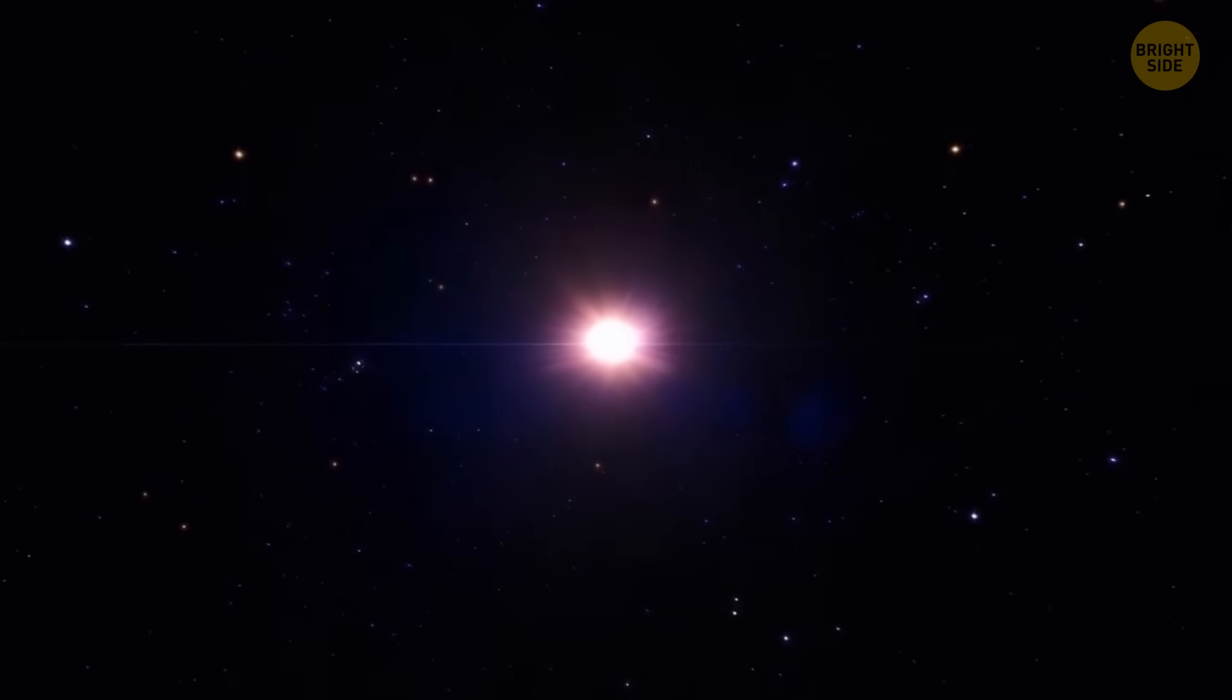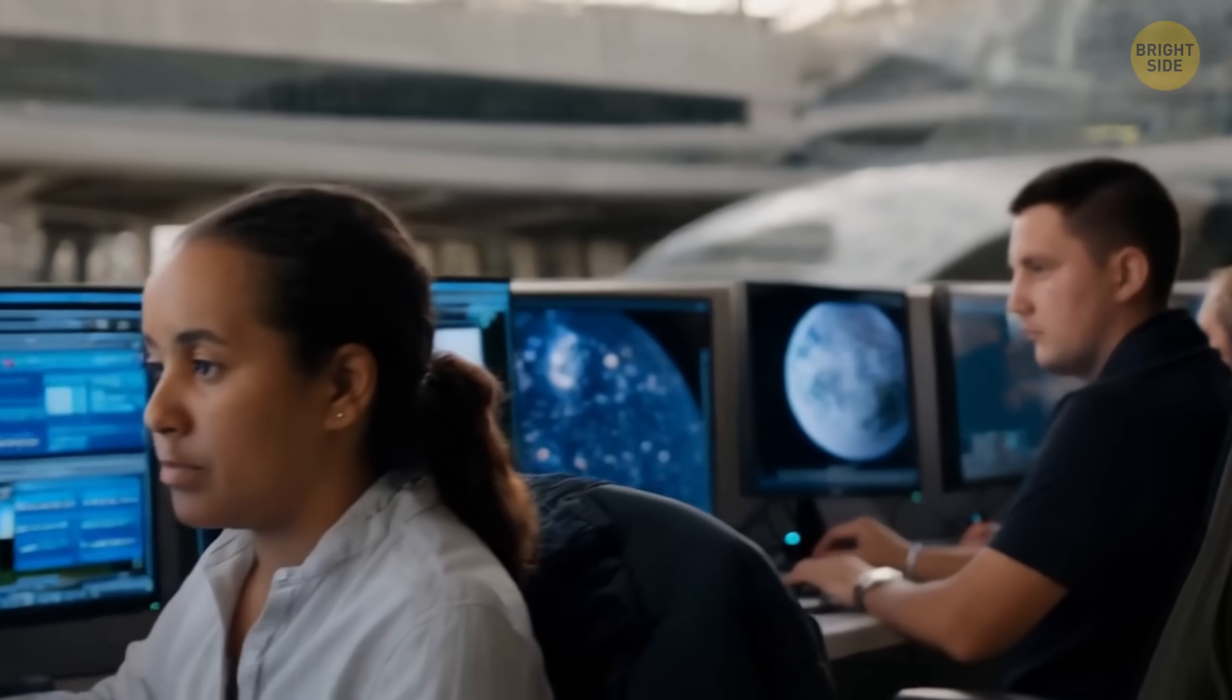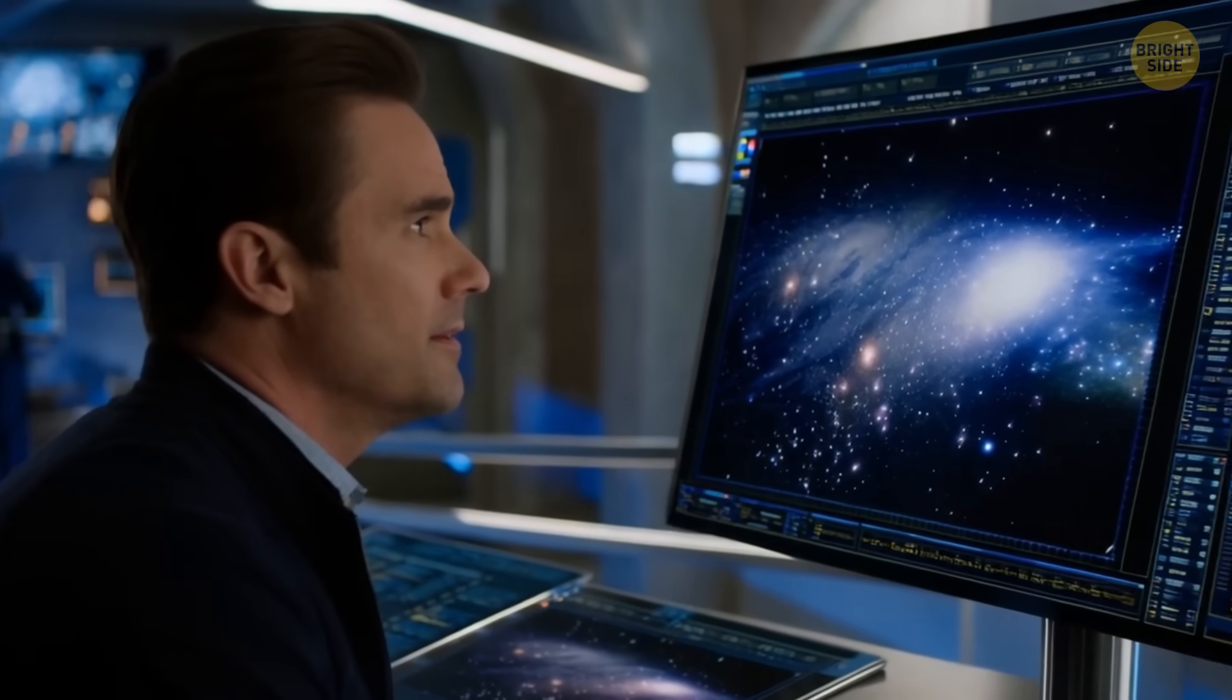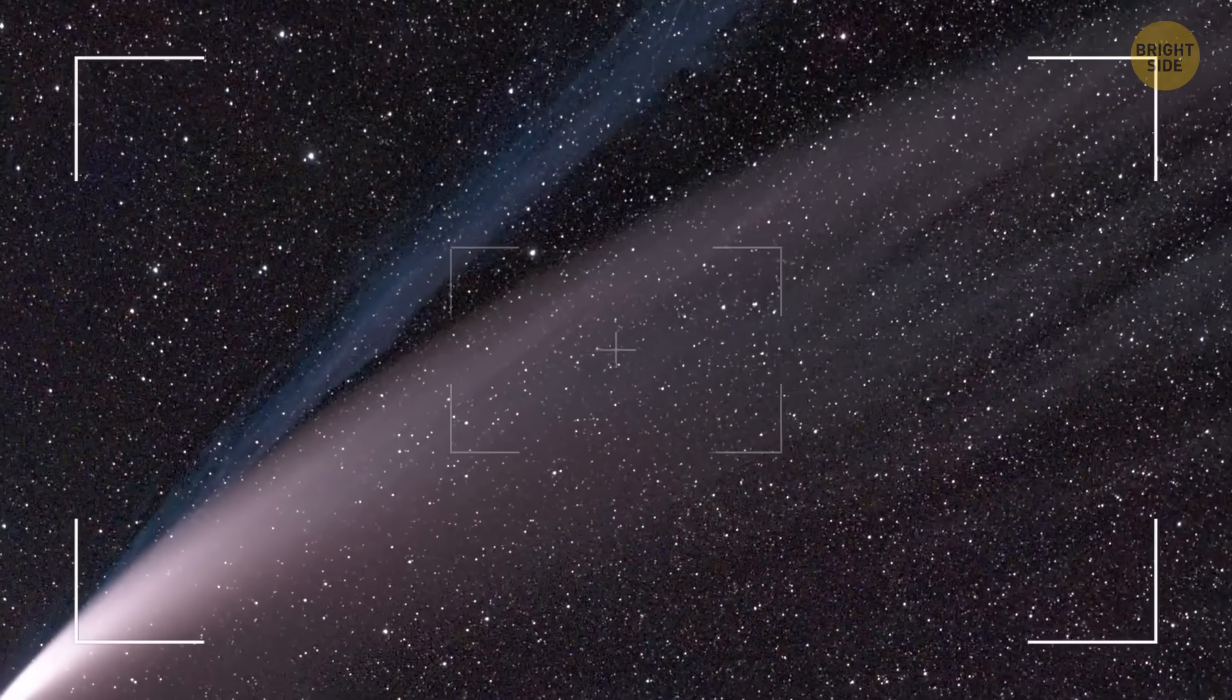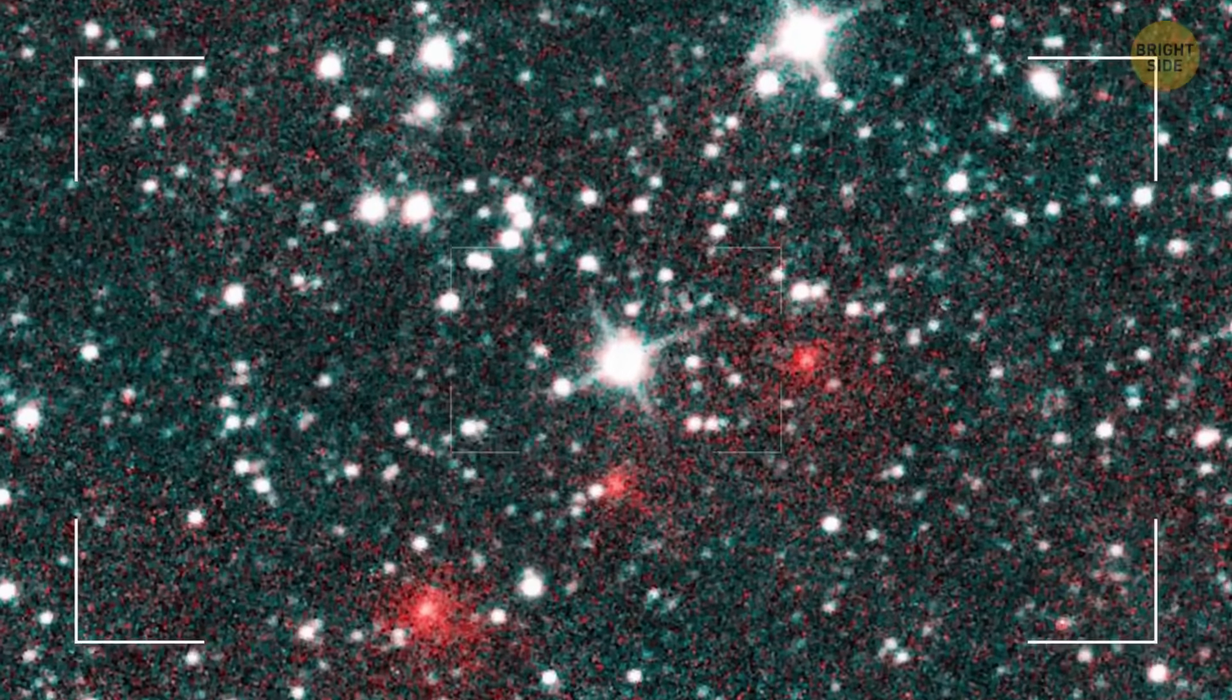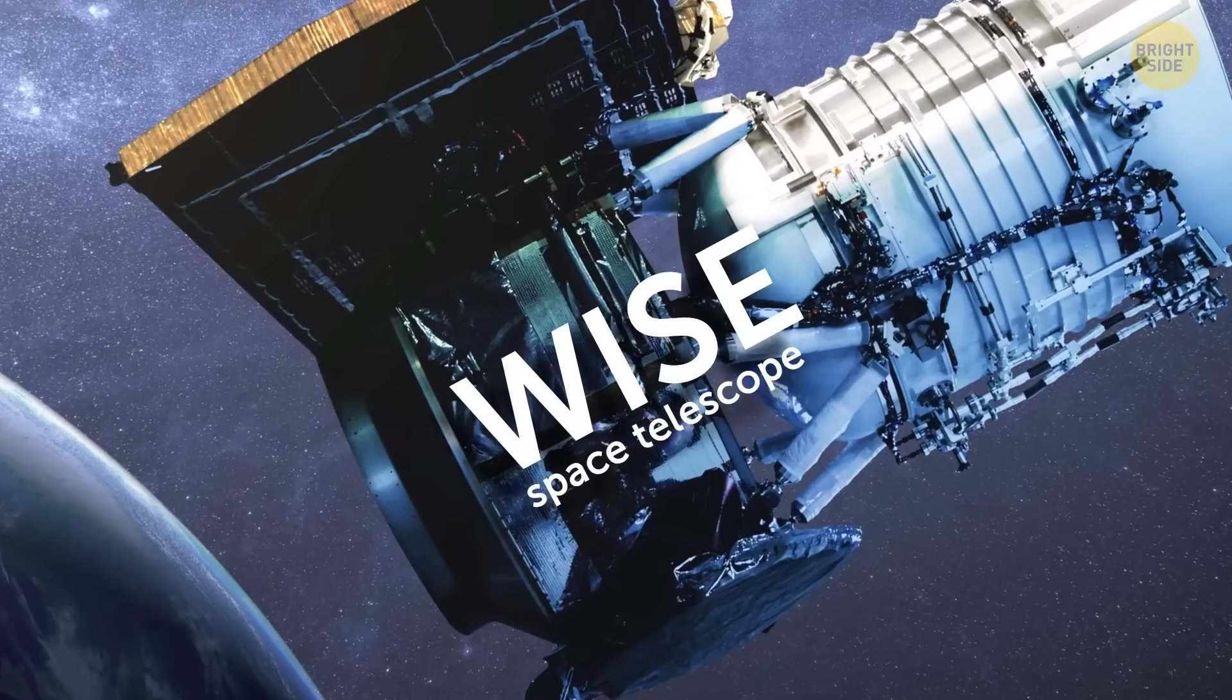J1249 was discovered by citizen scientists volunteering for NASA's Backyard Worlds Planet 9 project. These volunteers sift through online images taken by NASA's Wide Field Infrared Explorer and NEOWISE missions. They're looking for anything interesting. Three of those volunteers spotted a faint, fast-moving object as it moved across the images.